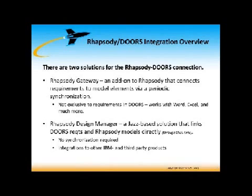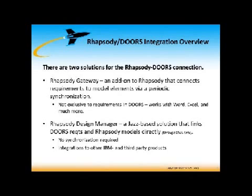The second solution is Rhapsody Design Manager, which is a relatively new product — it's been out for a few years and I think it's at version 4 right now. Design Manager is a Jazz-based product. It links requirements in Doors directly to model elements inside of Rhapsody. There is no synchronization required — it's a live link. So if I see a requirement in my Rhapsody model and hover over it or click on it, I'm looking at the live requirement in Doors. That's not true with Gateway; Gateway is a periodic synchronization that you have to run to keep everything up to date.